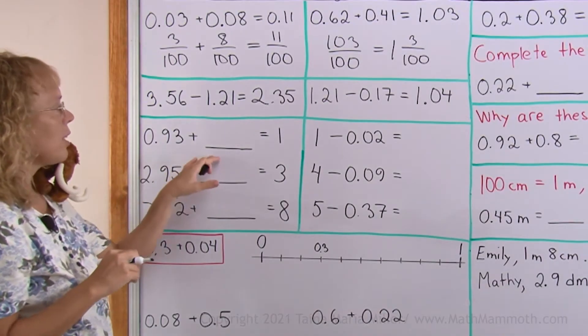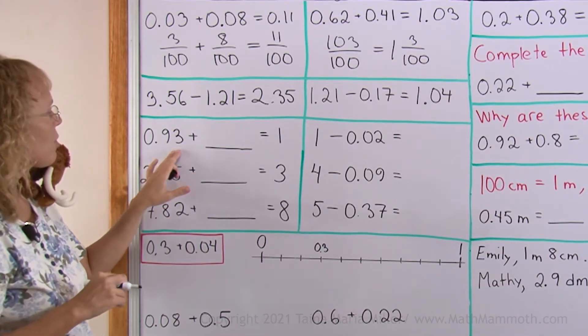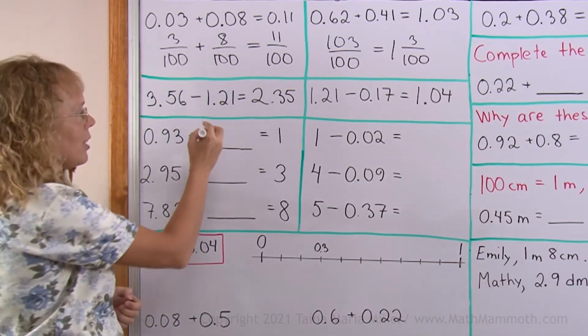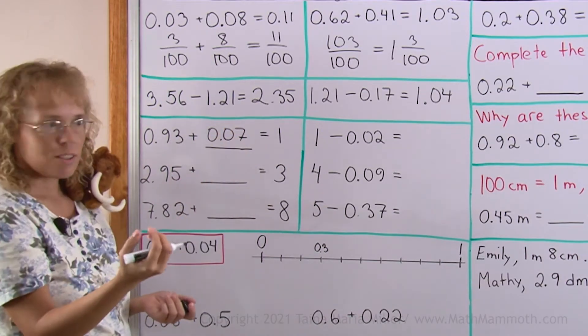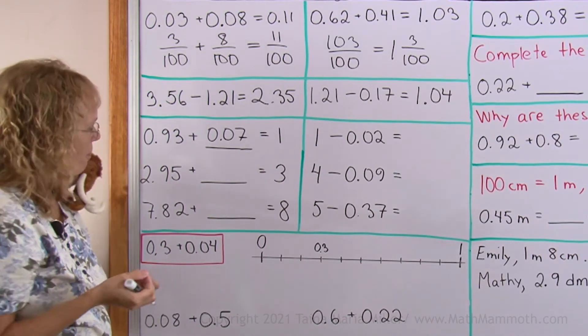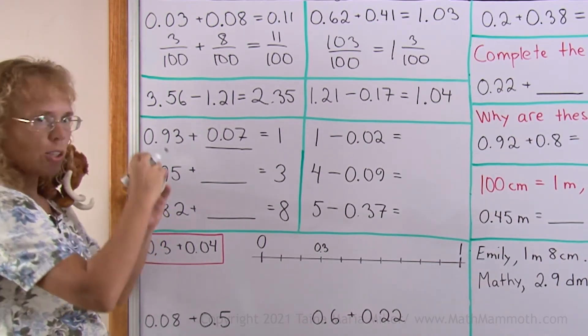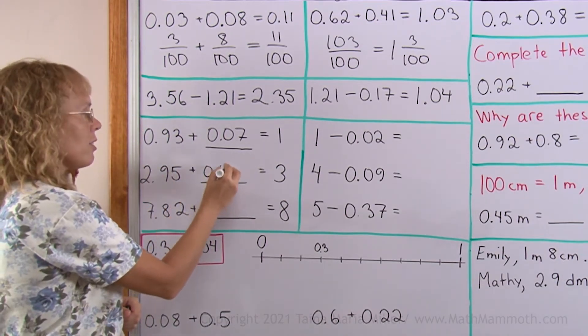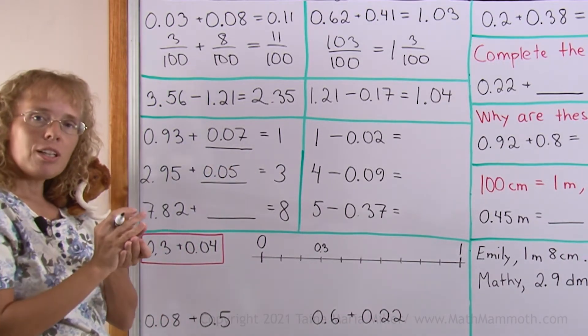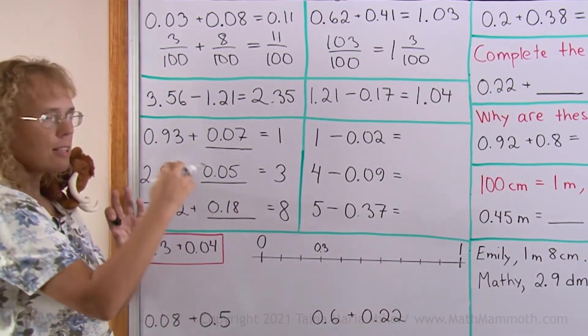Here we will now find the missing addend. How much to add to that to get one? Ninety-three hundredths plus how many equals one? Well that would be seven hundredths, right? That way we get hundred hundredths. Here similarly two point nine five, ninety-five hundredths. Just think of the ninety-five hundredths, and how many more hundredths do you need to get the whole hundred hundredths, and that is five hundredths. Over here seven and eighty-two hundredths, to eighty-two hundredths we will add eighteen hundredths. And then that completes the hundred hundredths.